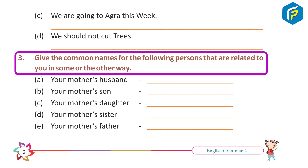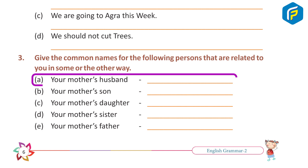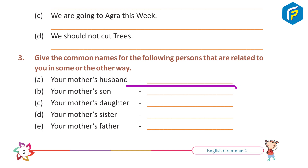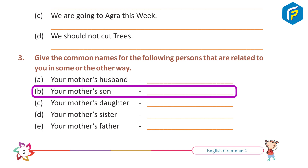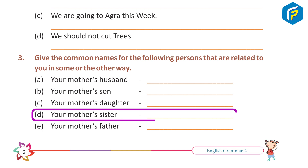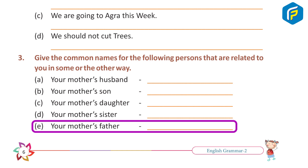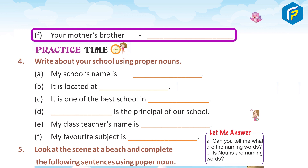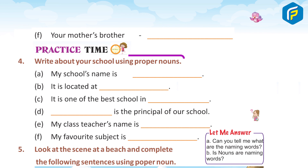Exercise 3: Give the common names for the following persons related to you. A. Your mother's husband — Answer: Your father. B. Your mother's son — Answer: Your brother. C. Your mother's daughter — Answer: Your sister. D. Your mother's sister — Answer: Your aunt. E. Your mother's father — Answer: Your grandfather. F. Your mother's brother — Answer: Your uncle.